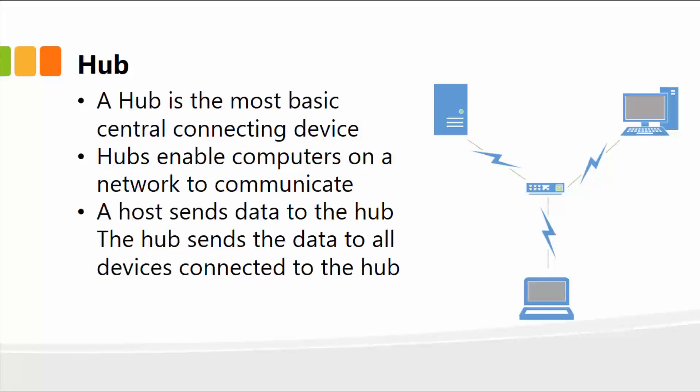It basically enables computers on the network to communicate — send data, transfer files, images, videos, and whatnot. So everything goes through this particular hub. A host sends data to the hub, and the hub broadcasts data to all the devices connected to it. Whichever computer is the destination computer will accept that particular message, and the other computers will reject it. The function of the hub is basically just to receive data and then broadcast to all of the nodes on the network.